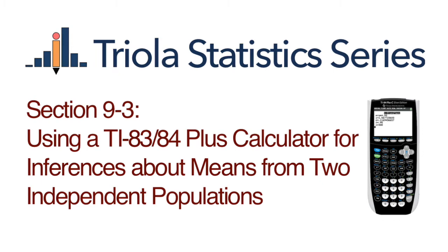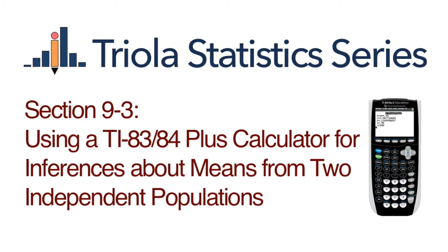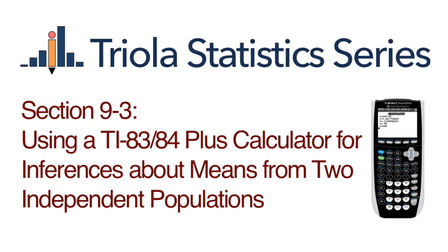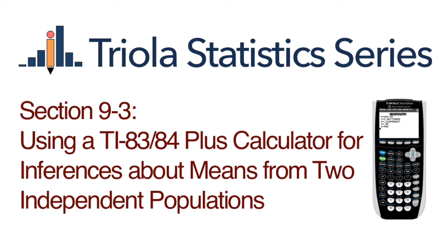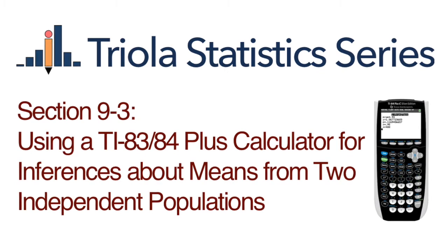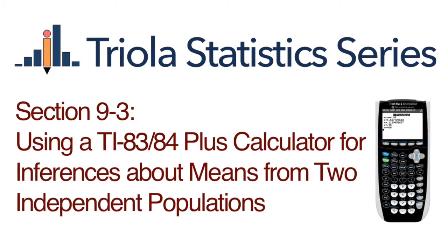Using a TI-83/84 Plus calculator for inferences about means from two independent populations. This video uses example 2 from section 9-3 titled 'Are We More Creative with Blue?' and example 3 from section 9-3 titled 'Confidence Interval for Creativity Scores.'